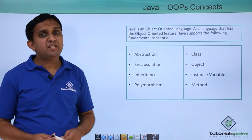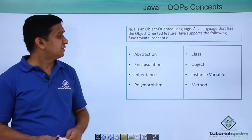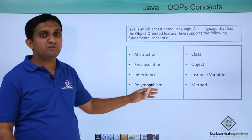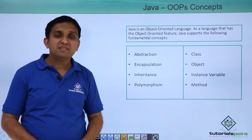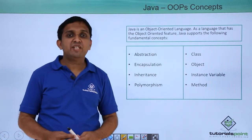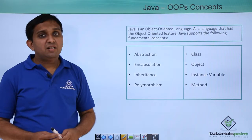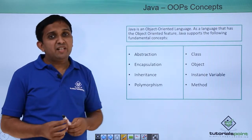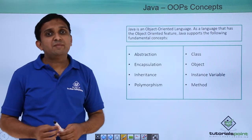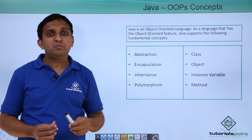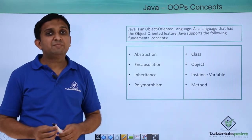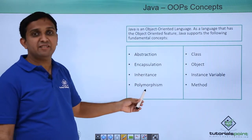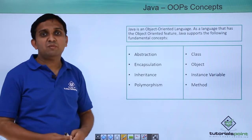According to OOPS, there are different terms like Abstraction, Encapsulation, Inheritance, Polymorphism, Class, Object, Instance, Variable, and Method. Now, there are 4 major pillars which a language should support: Abstraction, Encapsulation, Inheritance, and Polymorphism.